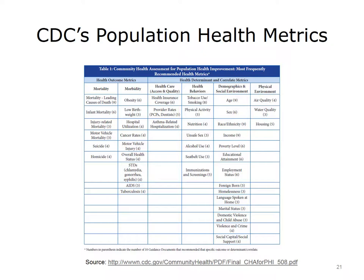The Centers for Disease Control (CDC) provides a longer list of metrics concerning population health. The table lists the most frequently recommended health metrics for community health assessments or population health improvements, showing the difference between health outcome metrics and health determinant and correlate metrics. Health outcomes are categorized by mortality and morbidity. Health determinants and correlate metrics are split into health care access and quality, health behaviors, demographics and social environment, and the physical environment. Examples of morbidity health metrics include obesity and low birth weight. Other metrics include health insurance coverage, tobacco use, race, and air quality. Each of these types of measures may be needed for a well-functioning population health data analytics system.